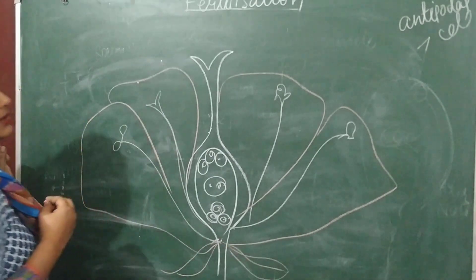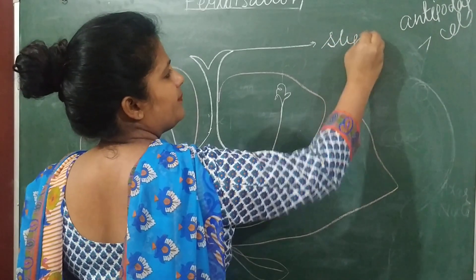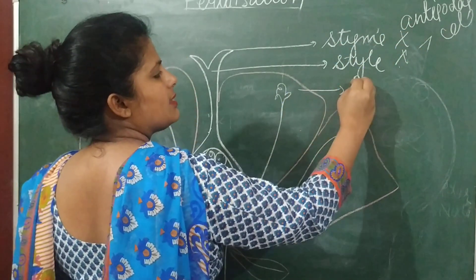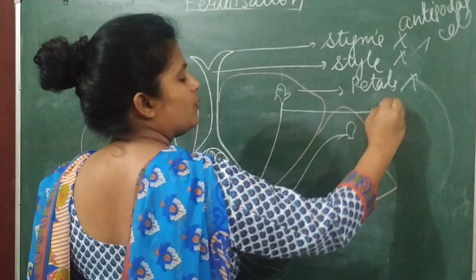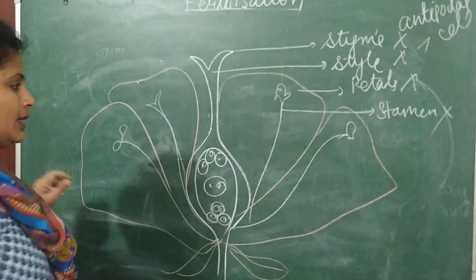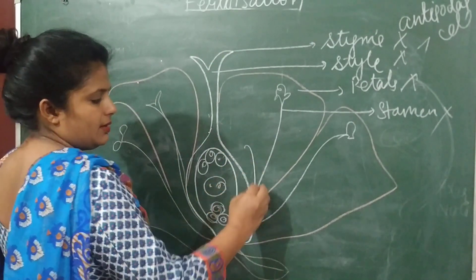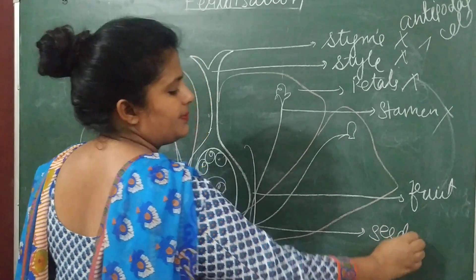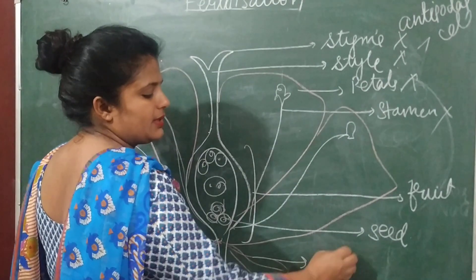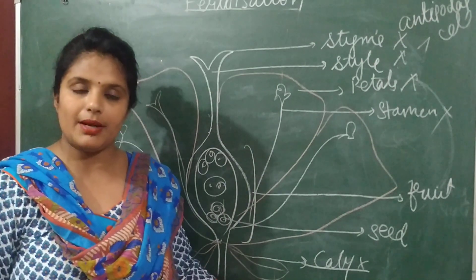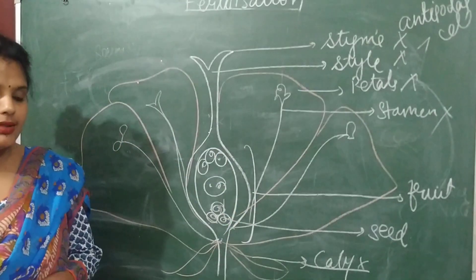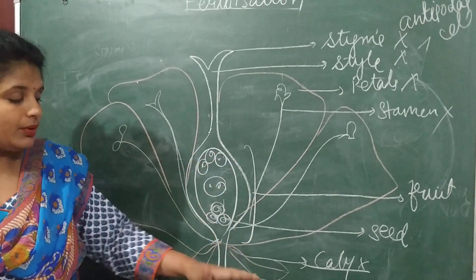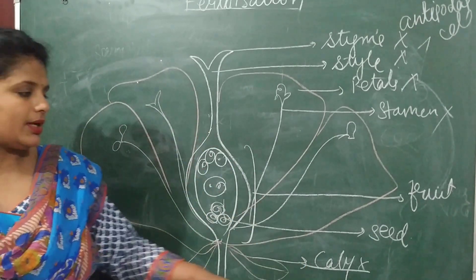After fertilization, the stigma, style, petals, and stamen all wither and fall off. This whole ovary converts into the fruit, and the ovule converts into the seed. What may remain is the calyx or epicalyx — that is called persistent calyx. For example, in brinjal, the calyx remains attached even after the flower converts into fruit, and that kind of calyx is known as persistent calyx.